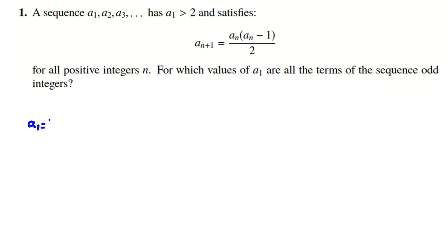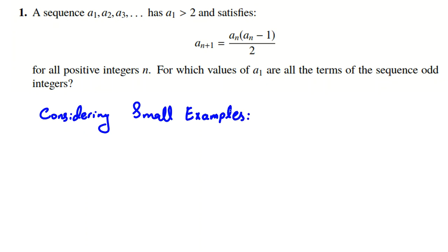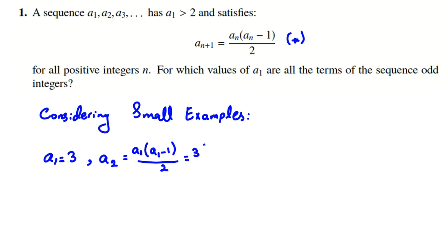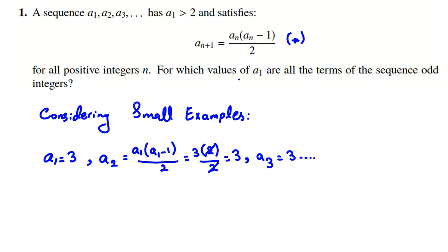Let's start with a1 equal to 3. The idea we want to work on is considering small examples. With a1 equal to 3, by the formula (call it star), a2 equals a1 times (a1 minus 1) over 2, which is 3 times 2 over 2, equal to 3. So a2 is 3, and a3 similarly equals 3, and so on. So a1 equal to 3 works — it is one of our answers.